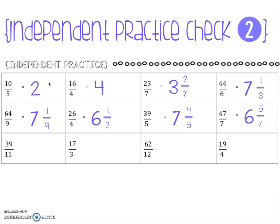47 sevenths is six and five sevenths. 39 elevenths is three and six elevenths. 17 thirds is five and two thirds. 62 over 12 is five and one sixth — make sure you're simplifying. And our last one, 19 fourths, is four and three fourths.